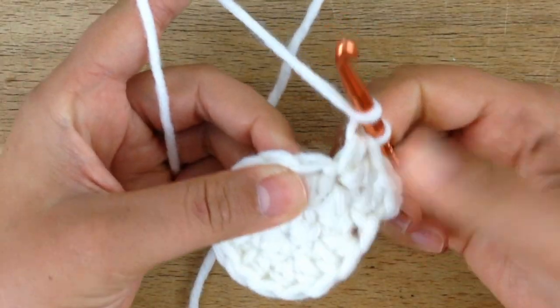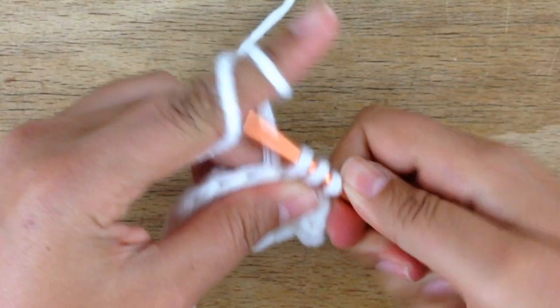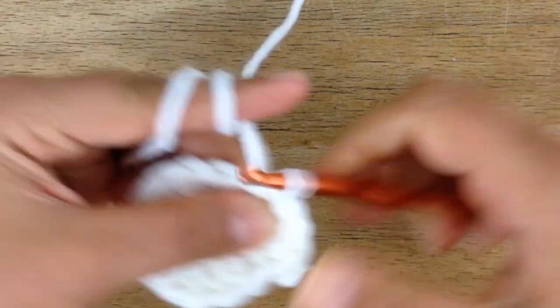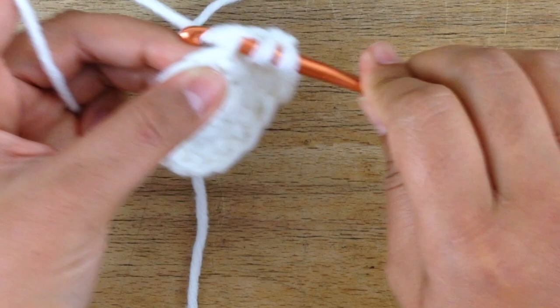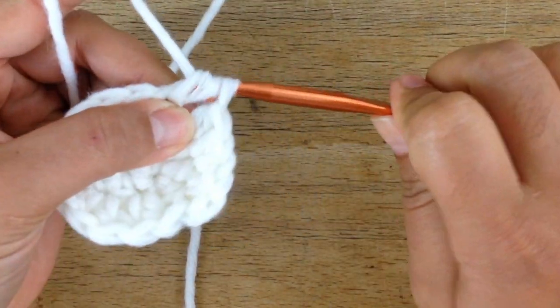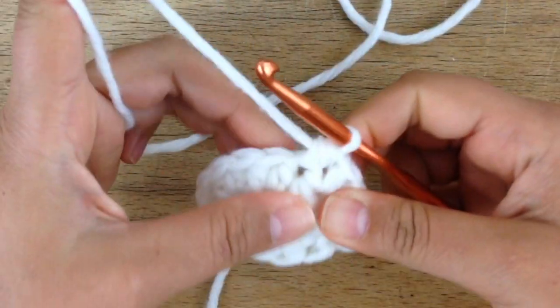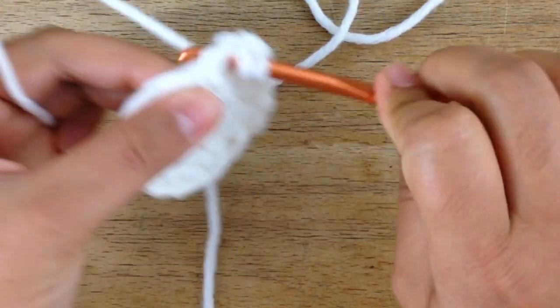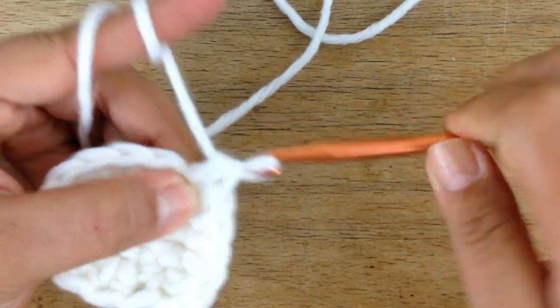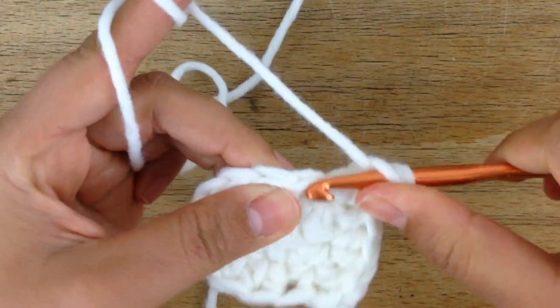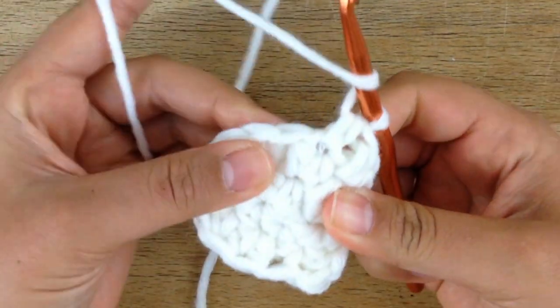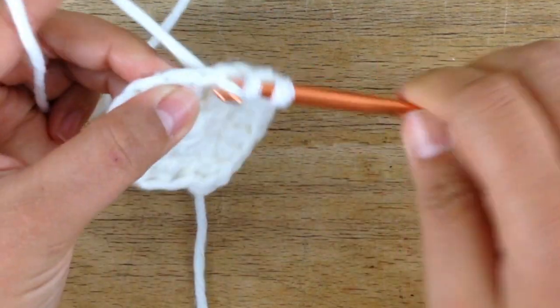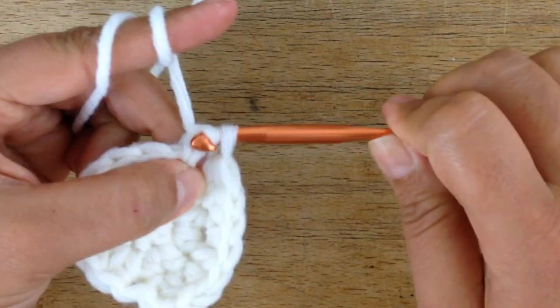Half double crochet one into the next, and then we will increase again in the next stitch, which means we will place two half double crochets into the next stitch. And so on and so on—one half double crochet and then two in the next. I'll meet you at the end of the round.